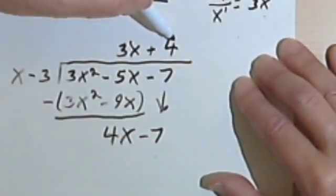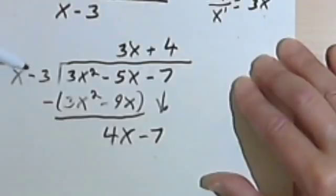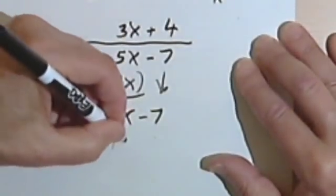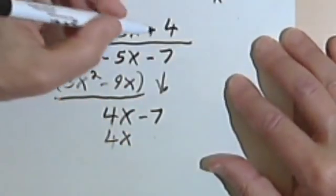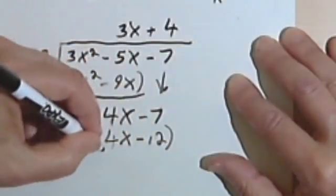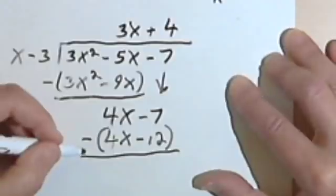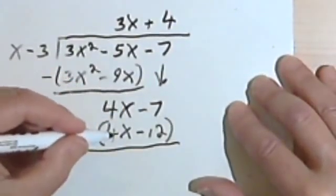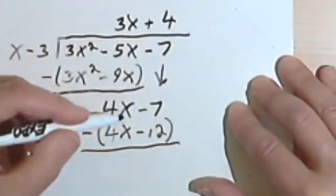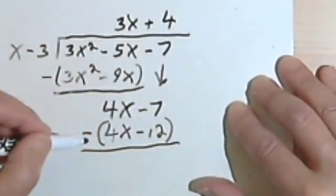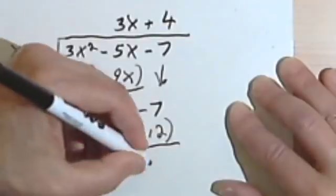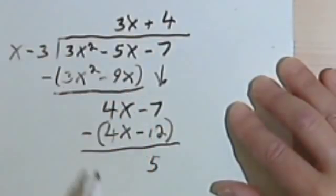And then I multiply 4 times the whole divisor. I distribute it. So 4 times x is 4x. These are both the same, that's good. 4 times -3 is -12. And then I'm going to subtract that. So subtracting 4x - 4x is 0. -7 minus -12. -7 minus a negative is the same as -7 + 12. So -7 + 12 is 5. This is my remainder.